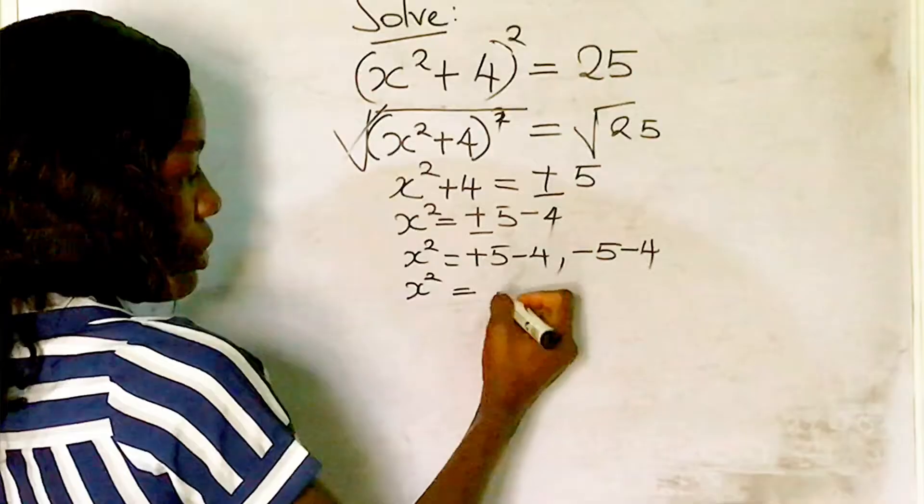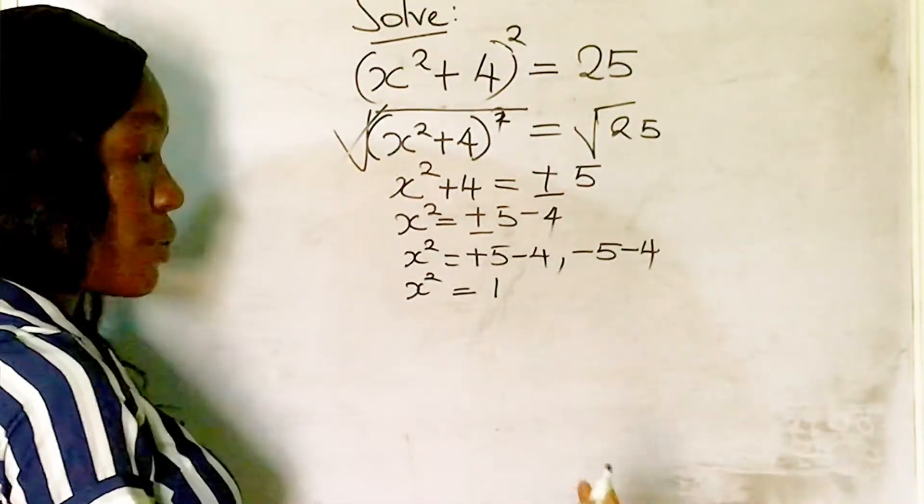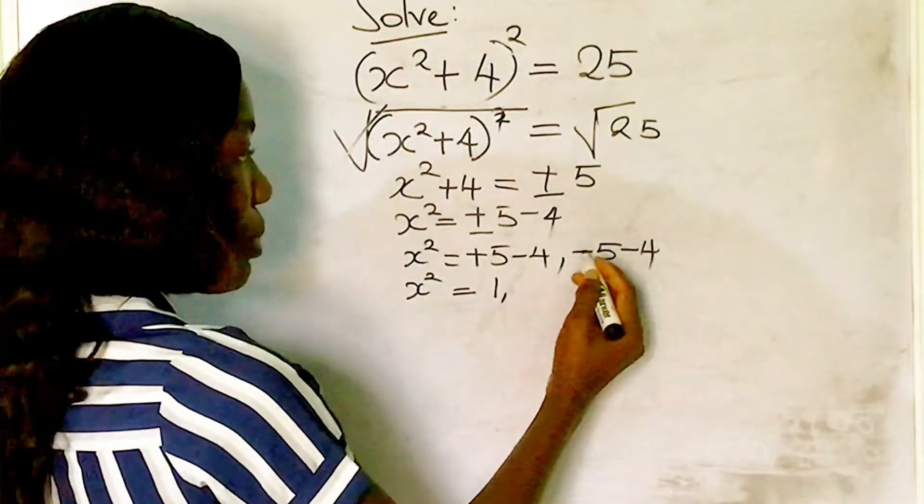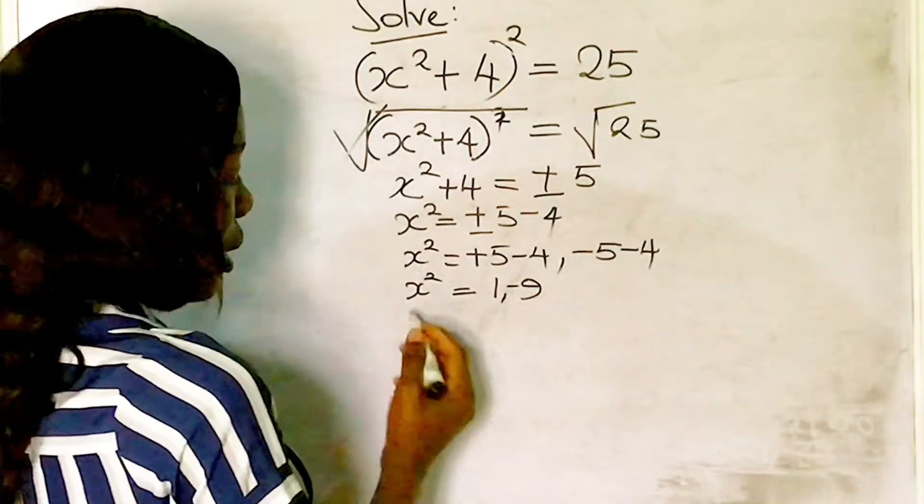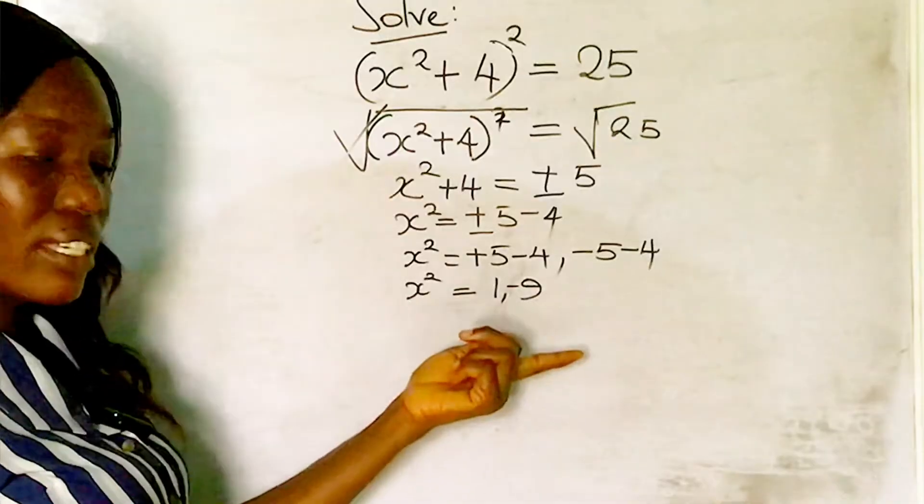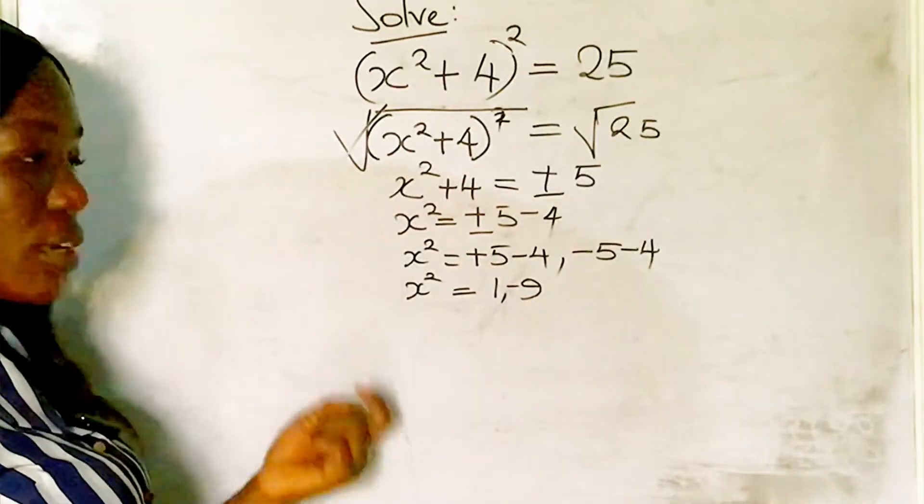...which gives us -9. The answers we have here, 1 and -9, are for x², not for x. To find the value of x, we need to remove the square.